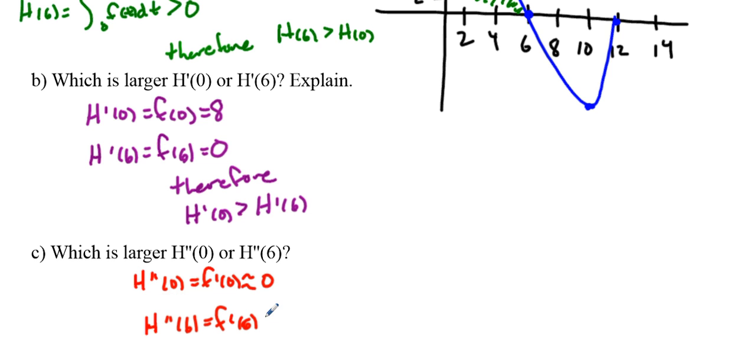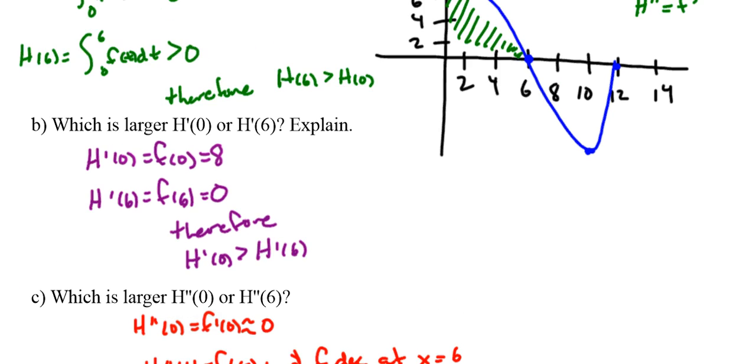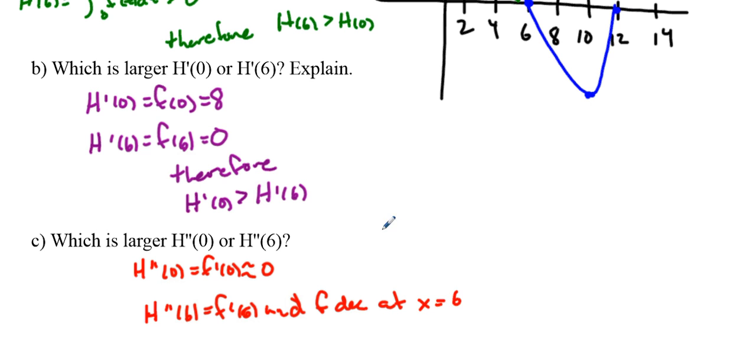Since we have this, we know that f is decreasing at this point at x equaling 6. Therefore, what is happening here? That means that f prime of 6 should be less than 0, because it's going down.